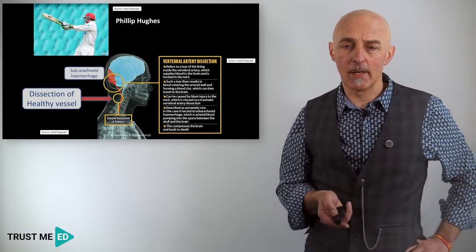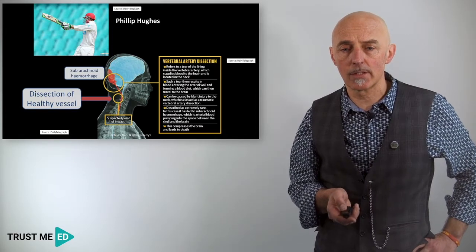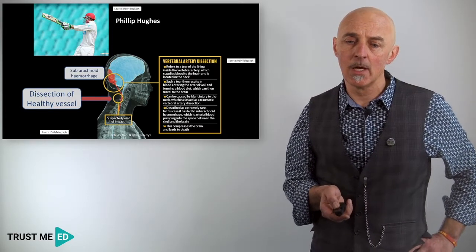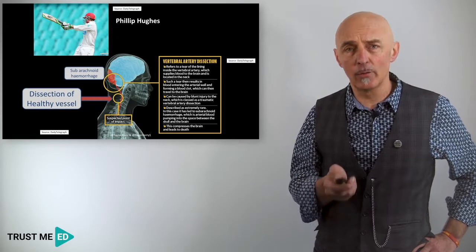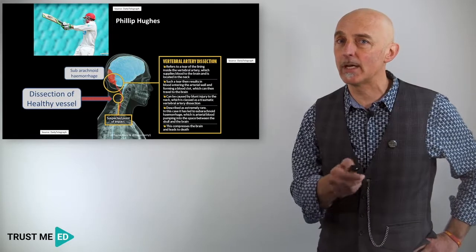Here's a very unfortunate example of a dissection to a vessel. This was the unfortunate Australian cricketer, Philip Hughes, who suffered a dissection of a healthy vertebral artery. So this was a vertebral artery dissection, that's another acronym, VAD.